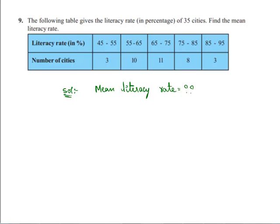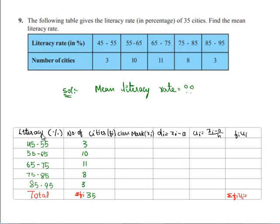Taking the tabular form here, literacy rate we have taken and number of cities as frequencies. This total sum of frequencies, that is sigma fi, is equal to 35.